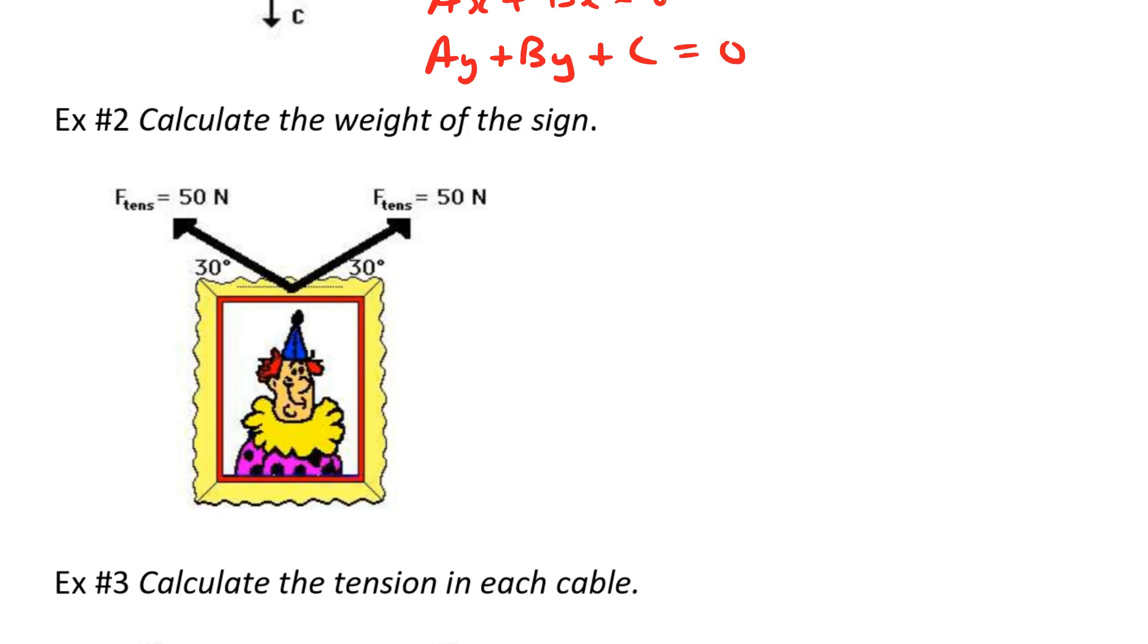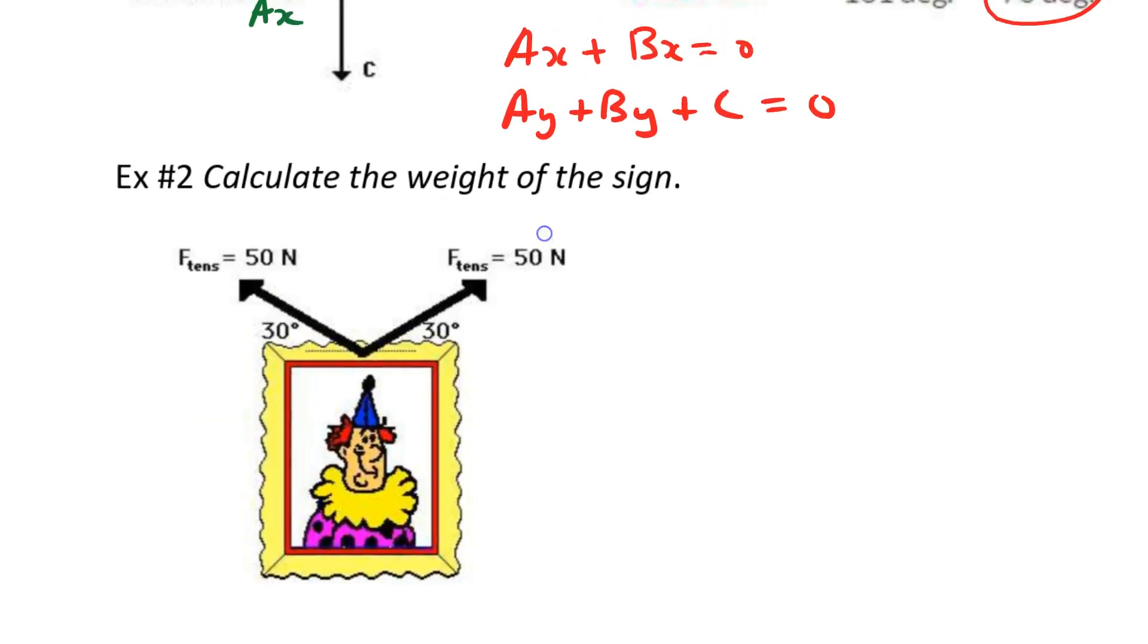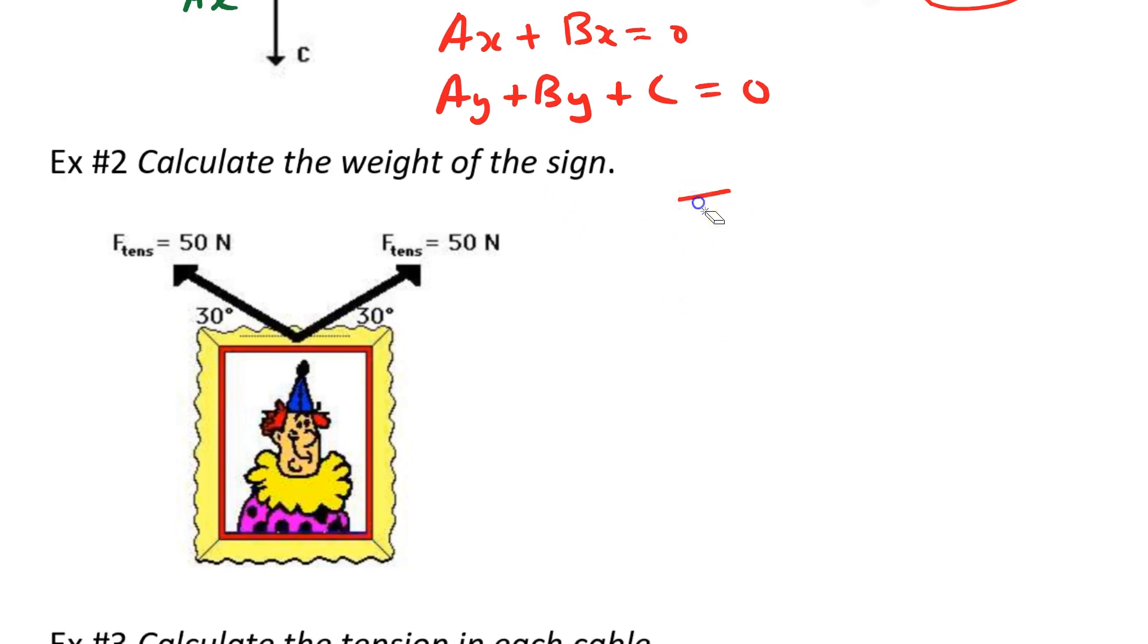Here's example number two: calculate the weight of this sign, and it has two tension forces on there. First of all, I'm going to mention instead of writing F_tens like that, I'm going to write capital T for my tension force. I'm going to redo this diagram. Here is my object, I'll just make it smaller. So here is one of my tension forces, I'll call it T1. Here's another one of my tension forces, I'll call that one T2. And of course, I have an angle here and an angle there, and it's 30 degrees.